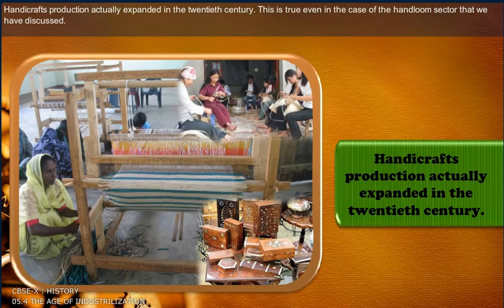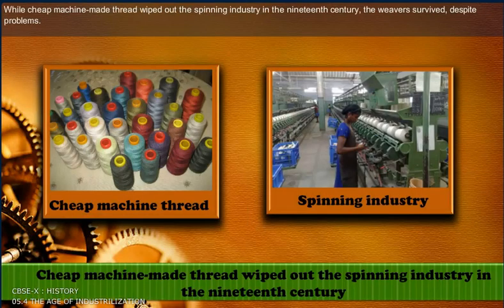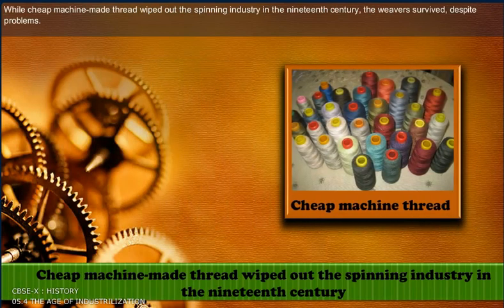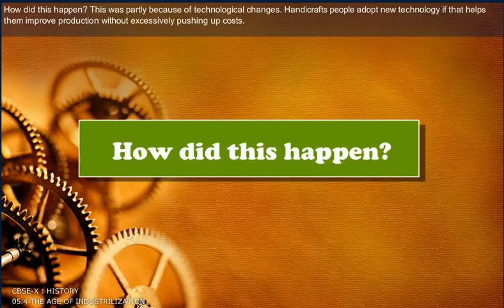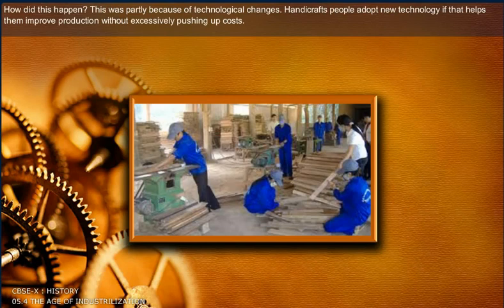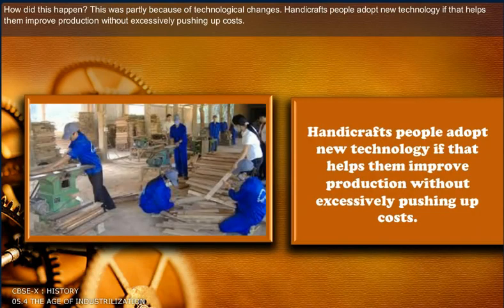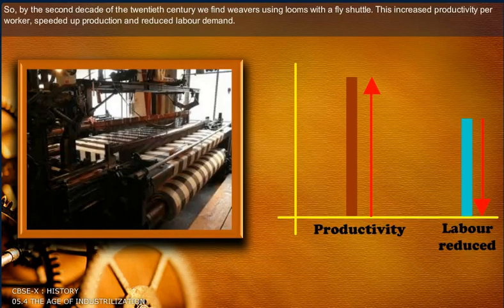This is true even in the case of the handloom sector. While cheap machine-made thread wiped out the spinning industry in the 19th century, weavers survived despite problems. In the 20th century, handloom cloth production expanded steadily, almost tripling between 1900 and 1940. This was partly because of technological changes. Handicrafts people adopt new technology if it helps improve production without excessively pushing up costs. By the second decade of the 20th century, weavers were using looms with a fly shuttle, which increased productivity per worker, speeded up production and reduced labour demands.